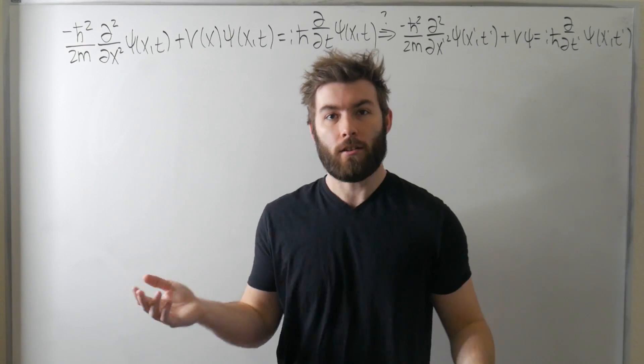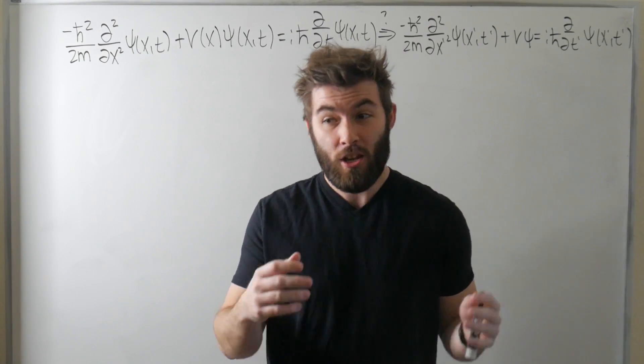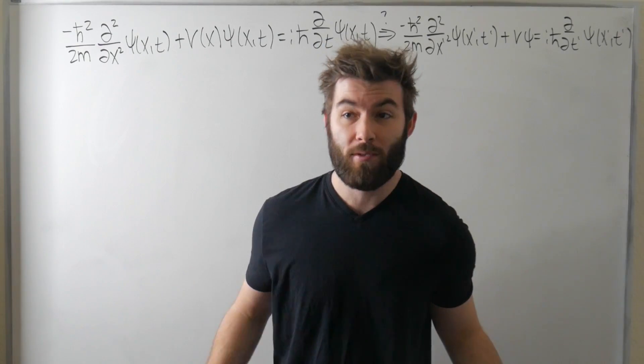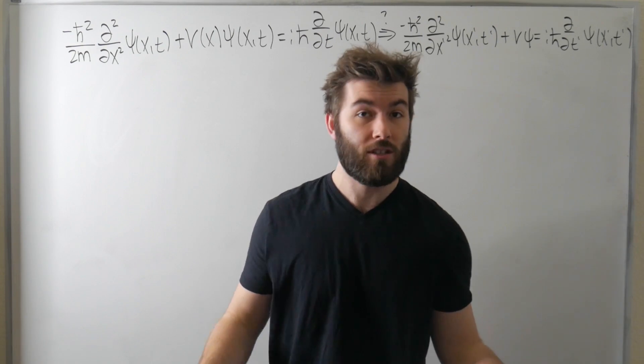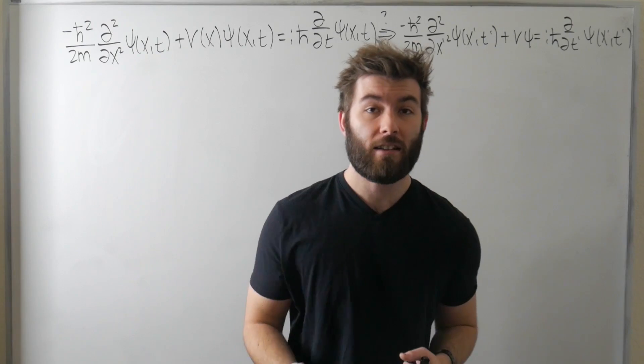And the answer is, he tried. Klein and Gordon were not the first people to attempt a relativistic quantum mechanics. Schrödinger beat them to it. He had his version of the Klein-Gordon equation, did all the same things, only described spinless particles, predicted negative energy solutions, failed to properly describe the gyromagnetic ratio of spin and the magnetic moment.